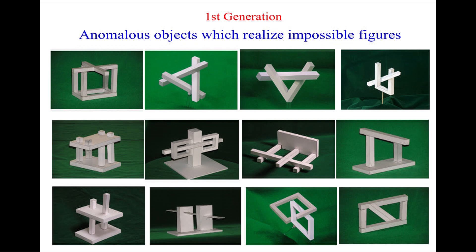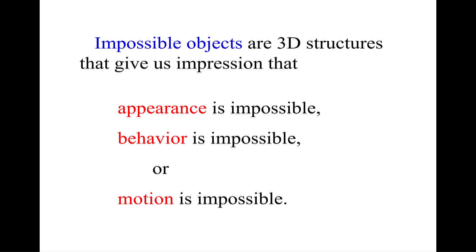Using this trick, we can construct many 3D objects from pictures of impossible objects. I named them as the first generation because I found many other types of objects which may be called impossible objects. My definition of impossible objects is the following: they are 3D structures that give us the impression that appearance is impossible, behavior is impossible, or motion is impossible.